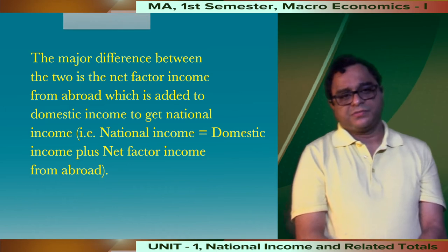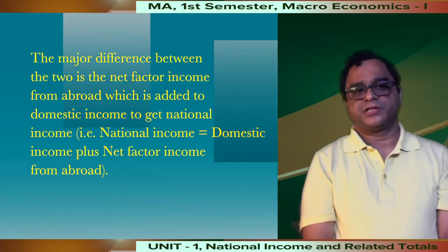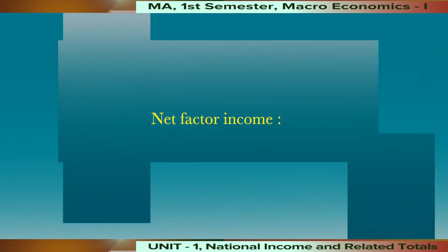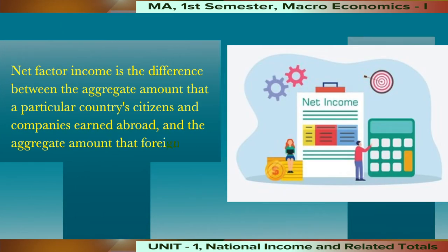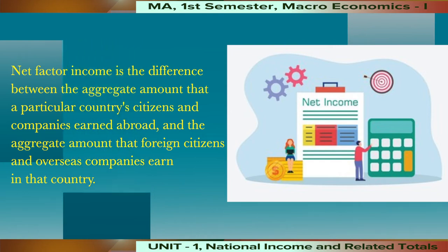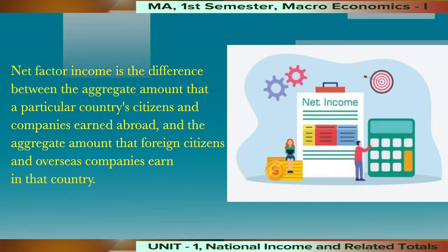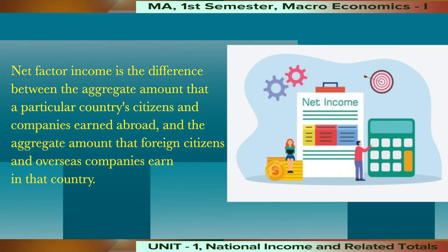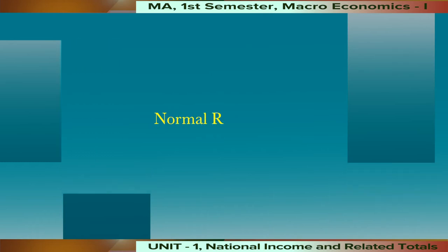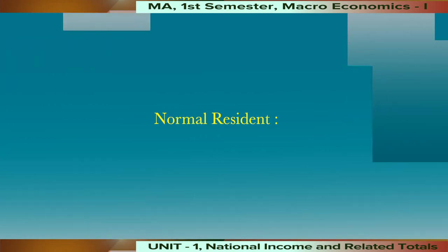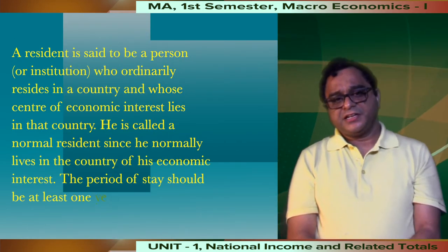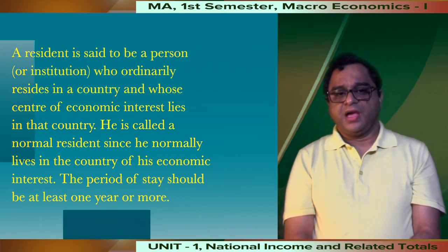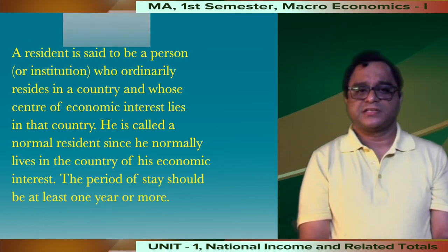Now, let us discuss two important terms: net factor income and normal residents. Net factor income is the difference between the aggregate income that a particular country's citizens and companies earned abroad and the aggregate amount that foreign citizens and overseas companies earned in that country. A normal resident is a person or institution who ordinarily resides in a country and whose center of economic interest lies in that country.